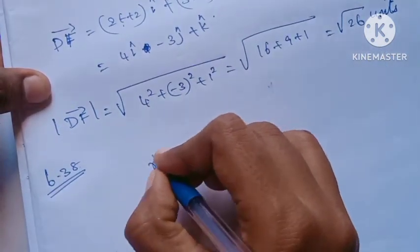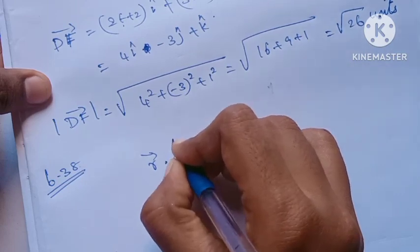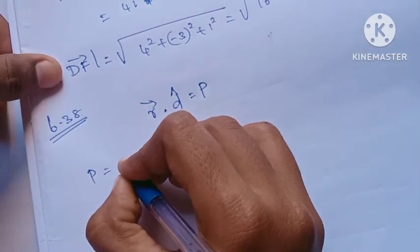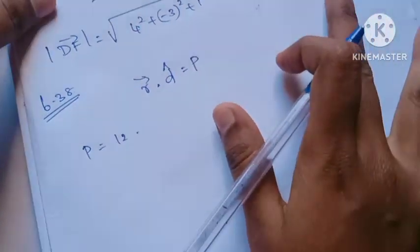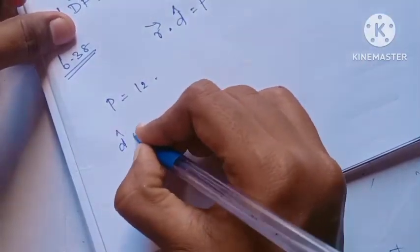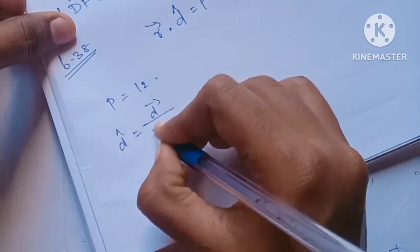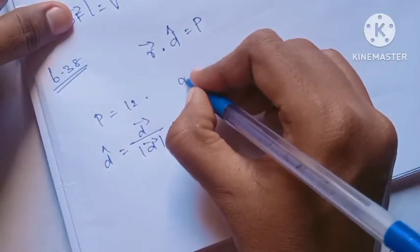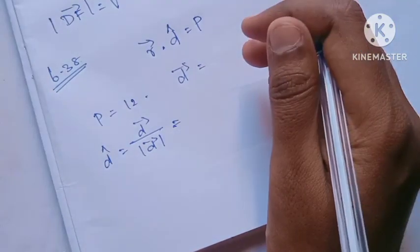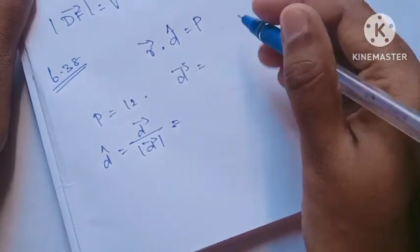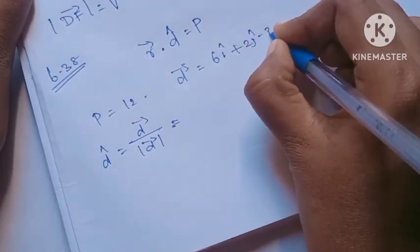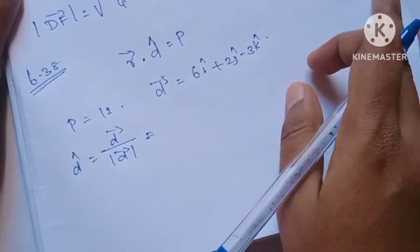R-vector dot n-cap is equal to d, where d is equal to 12. n-cap is equal to d-vector by modulus of d-vector. D-vector is 6i+2j-3k.